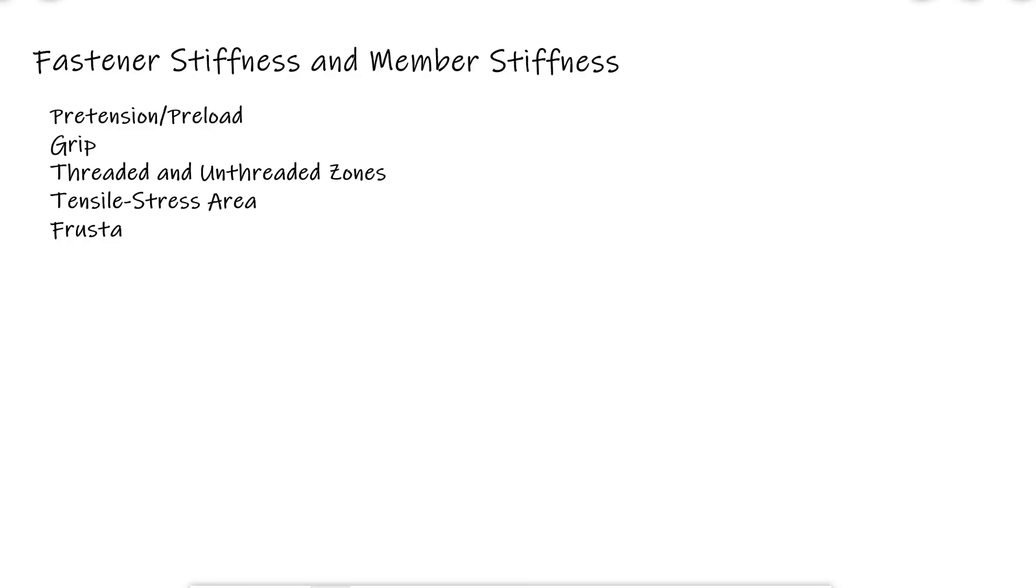We commonly use fasteners to create non-permanent joints that resist tensile, moment, and shear loads between two or more objects. Regardless of if the type of threaded fastener is a bolt and nut or a common screw, there is interest in understanding the forces that withstand these loads, as well as the initial clamping force called pretension or preload.